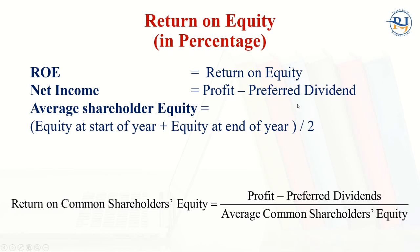In the ROE formula, net income is equal to profit minus the preferred dividend. Profit is calculated as sales minus all kinds of expenditure, whether operating or non-operating, and after taxes — that is the net income.